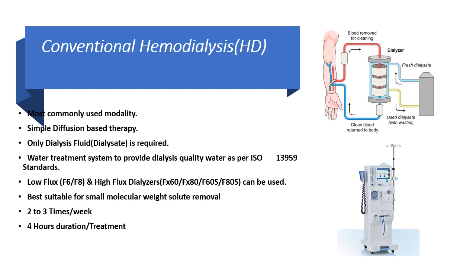Low flux and high flux dialyzers can be used for conventional haemodialysis. Since the modality is diffusion-based, it is effective in removing small molecular weight solutes such as urea or creatinine. It is usually performed two to three times a week with a four-hour duration per treatment.